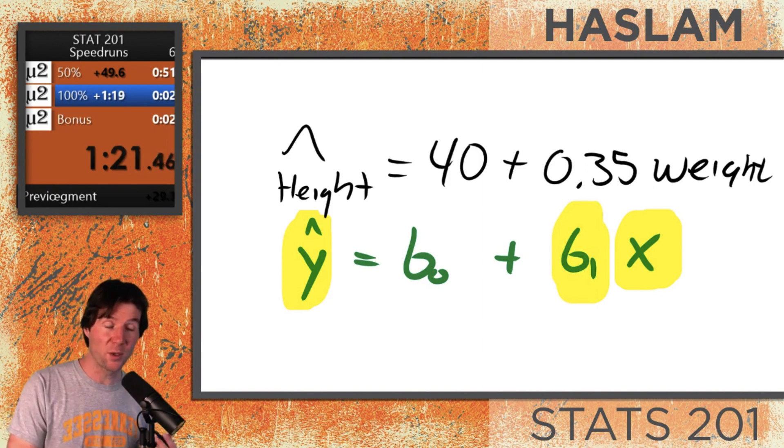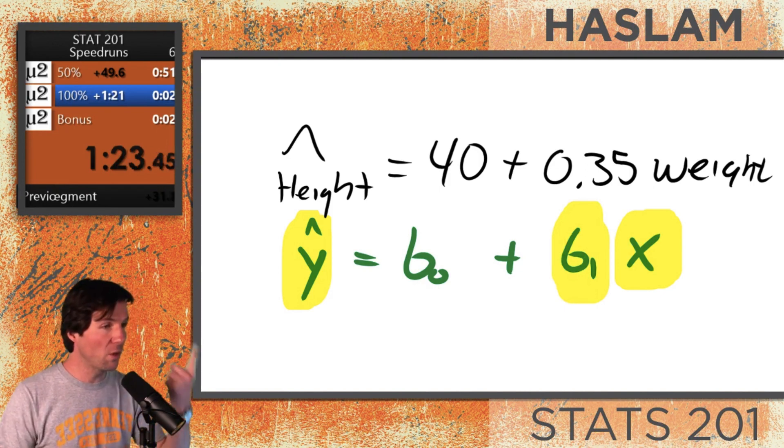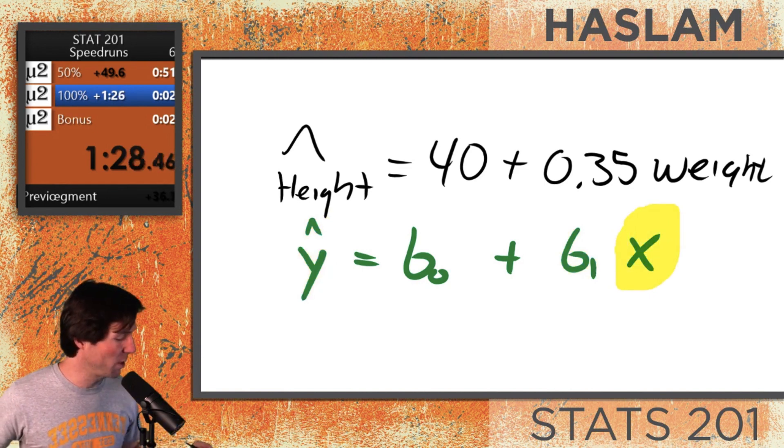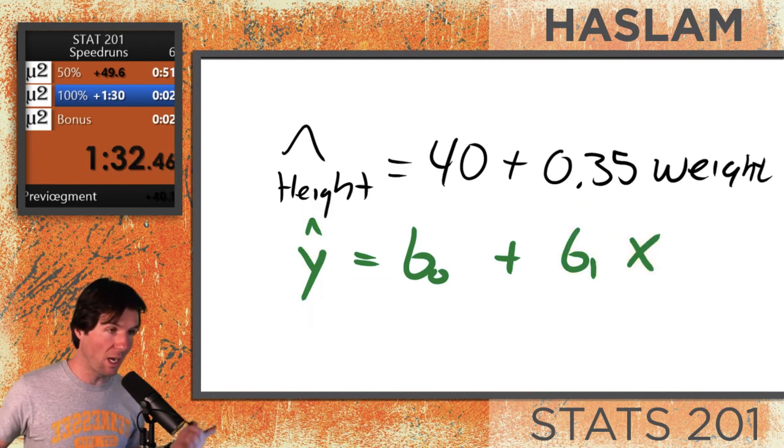Now you could say we would predict that y increases because that is predicted y. But notice how I say 1 two times. For each one unit increase in x, we expect y to increase by B1.